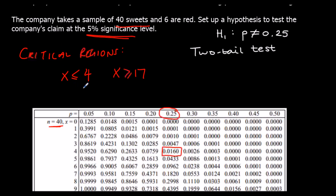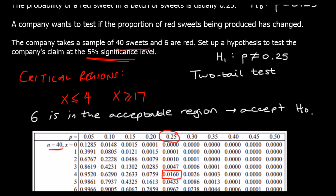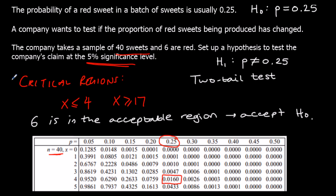So our critical regions are x ≤ 4 or x ≥ 17. If our random sample falls in these critical regions we reject the null hypothesis and support the alternative hypothesis. In our test, 6 sweets are red, and that isn't in the critical regions — it's in the acceptable region. So we accept the null hypothesis: we don't have any evidence to say that the proportion of red sweets has changed.